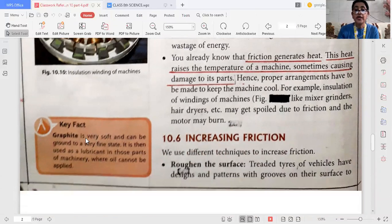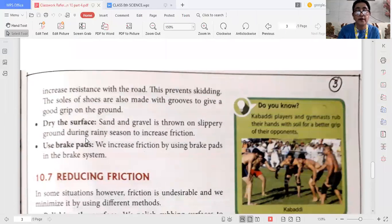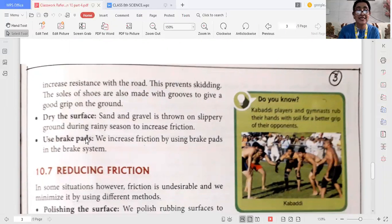Now how to increase friction? We use different techniques to increase friction. First of all, we can increase the roughness of the surface. Treaded tires of vehicles have designs and patterns with grooves on their surface to increase the resistance with the road. This prevents skidding.